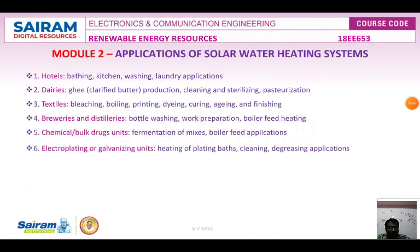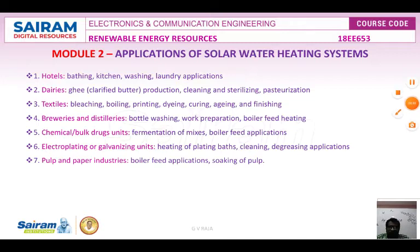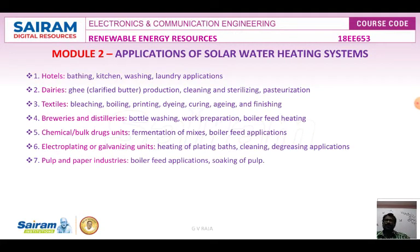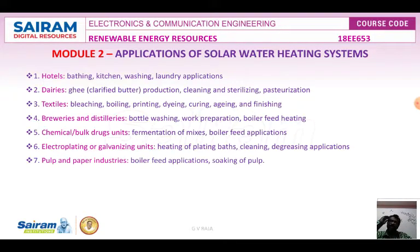Applications of the solar water heating system include hotels, dairies, textiles, breweries, distilleries, chemical bulk drug units, electroplating and galvanizing units, and pulp and paper industries. In hotels, it may be used for hot water for bathing, kitchen use, washing, laundry, dishwashers, and cleaning.